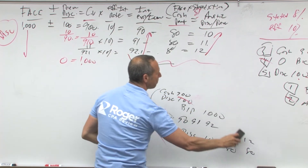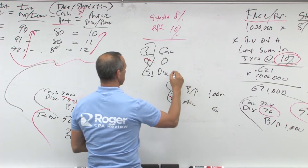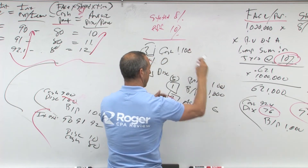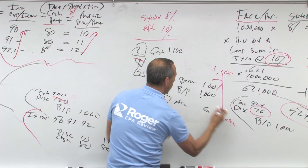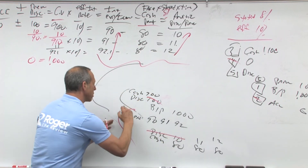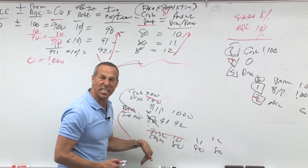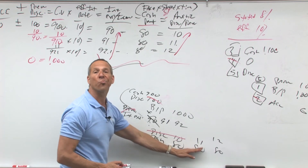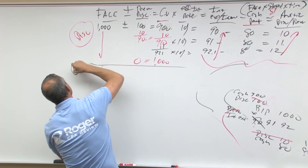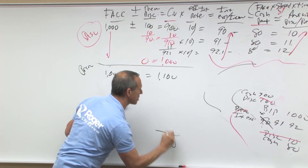Let's do the same question as a premium. We credit bonds payable for a million and receive a million one, giving us a premium of 100. What's my carrying value? A million one. What does it have to go down to? A million. So I have to amortize out the premium. Starting at a million, plus 100 is a million one. It has to go down, down, down to a million — getting smaller and smaller.